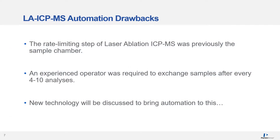Looking at some of the current drawbacks in the automation of laser ablation ICP-MS, the rate-limiting step was previously the sample chamber. Sample chambers used in laser ablation ICP-MS can typically fit about five samples, maybe ten, and an experienced operator was required to exchange samples every four to ten analyses. However, we will discuss new technology and how we can automate this.